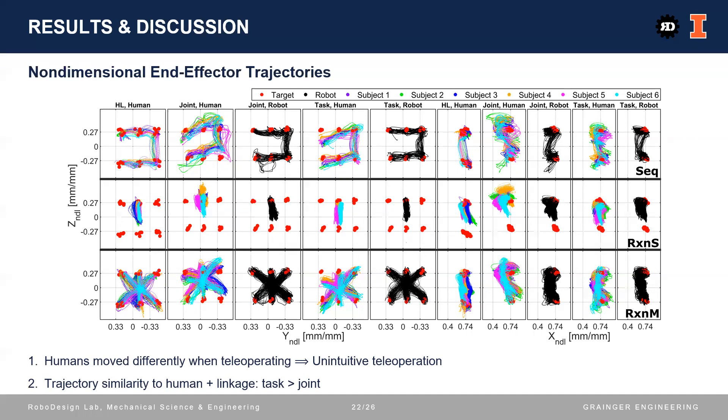Second, the humans' trajectories from task-based mapping were still more similar with the humans' trajectories without teleoperation, as they are less curvy and less chaotic than the humans' trajectories from joint-based mapping.